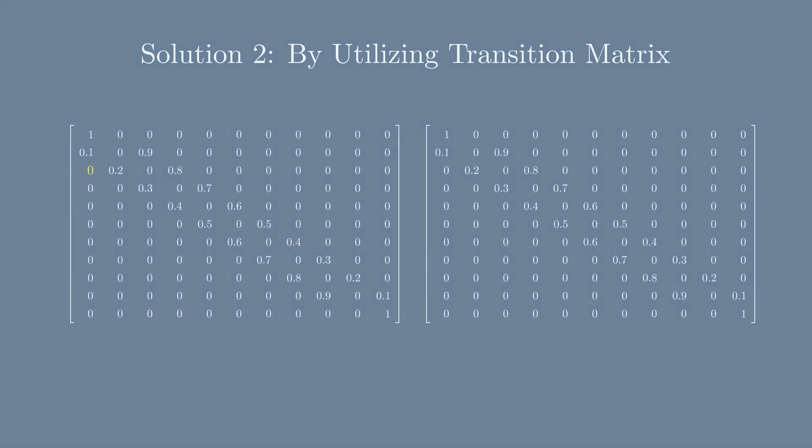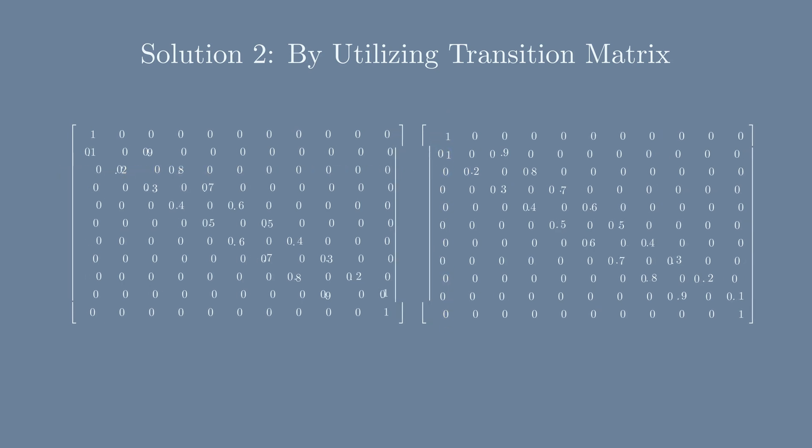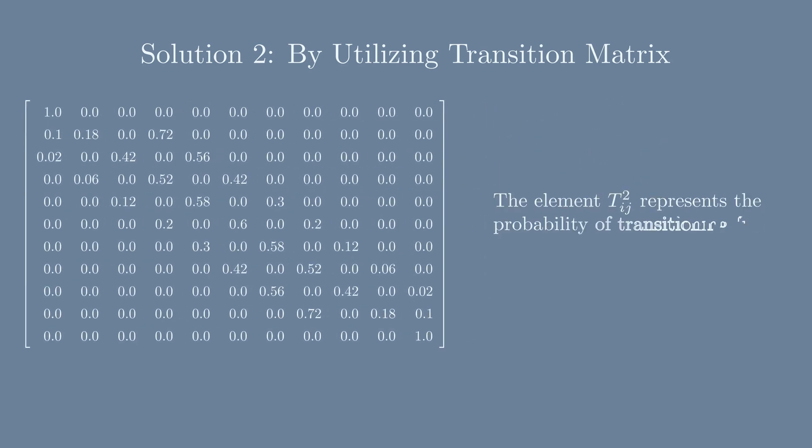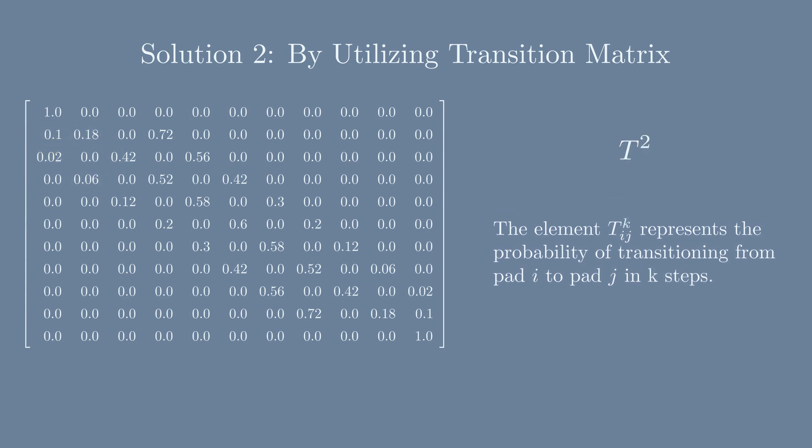We can obtain the two-step transition matrix by squaring the transition matrix. Notice that it was impossible to go from lily pad number 3 to lily pad number 1 directly in one step, but by multiplying the corresponding row and column we will find that the two-step probability of going from lily pad number 3 to lily pad number 1 is no longer zero.